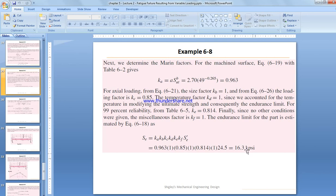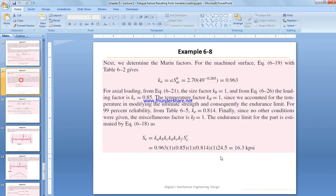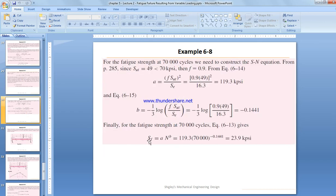We incorporate the whole equation to get 16.3 ksi. We need to find the value of fatigue strength at 70,000 cycles. We already found the endurance one: SE is equal to 16.3. So we need to find the fatigue strength at this value.